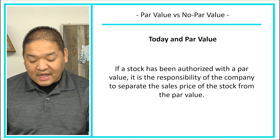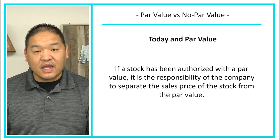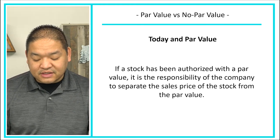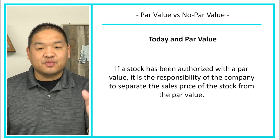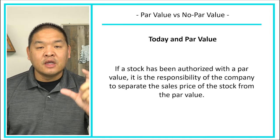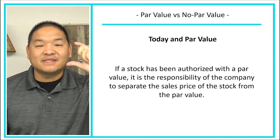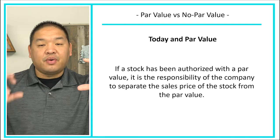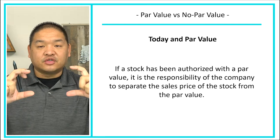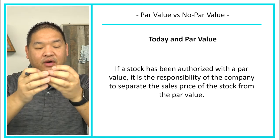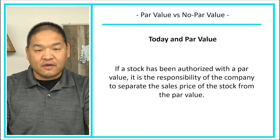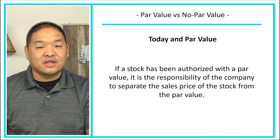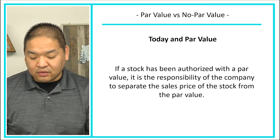If a stock has been authorized with a par value, it is the responsibility of the company to separate the sales price of the stock from the par value. So we take what we sell the stock for, extract the par value from it, and the rest goes into another account.